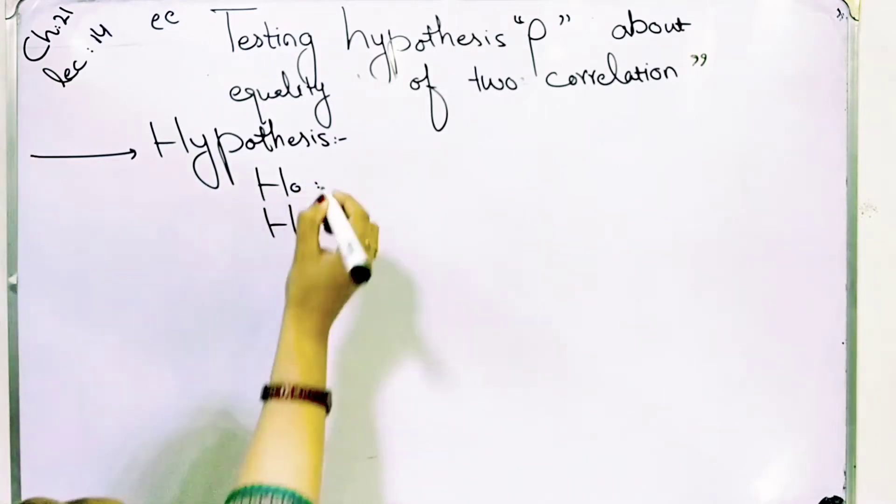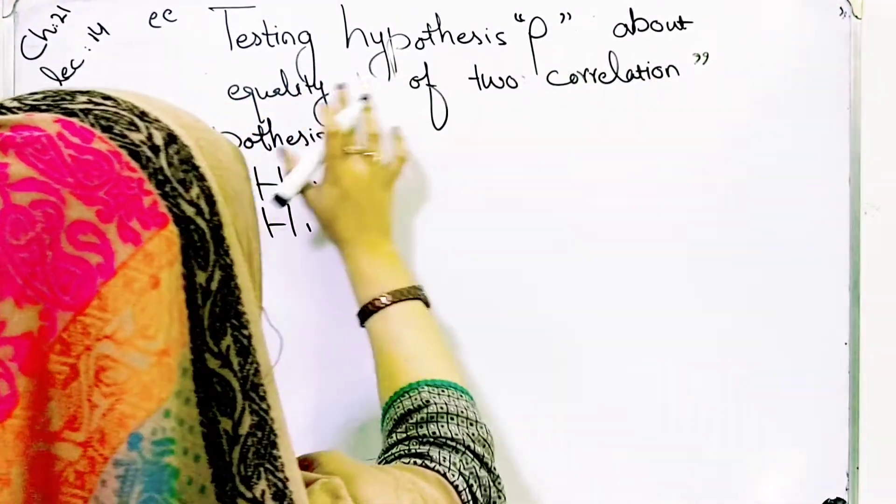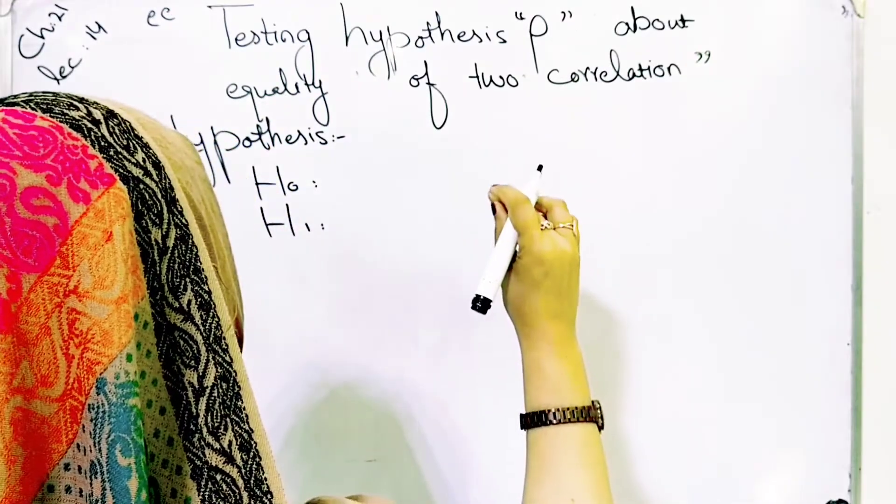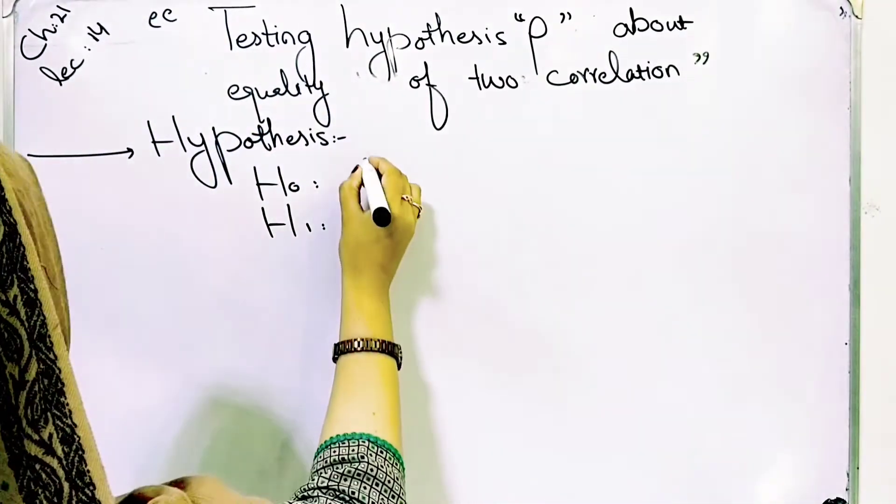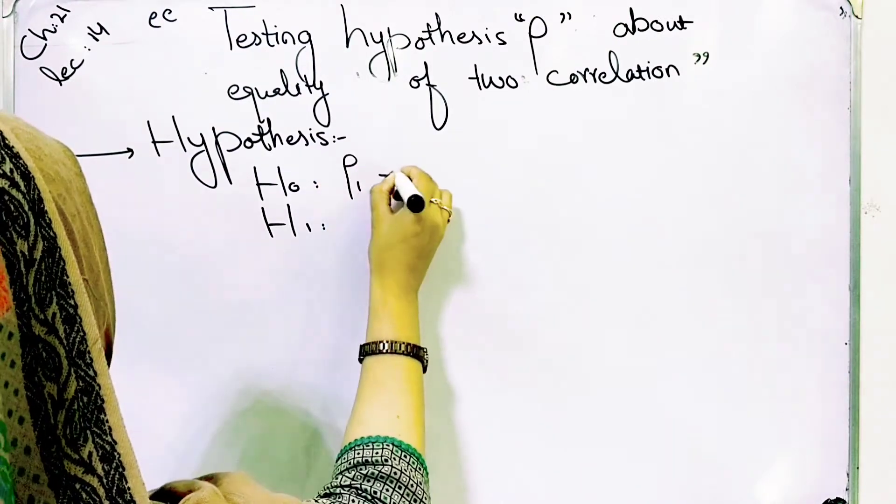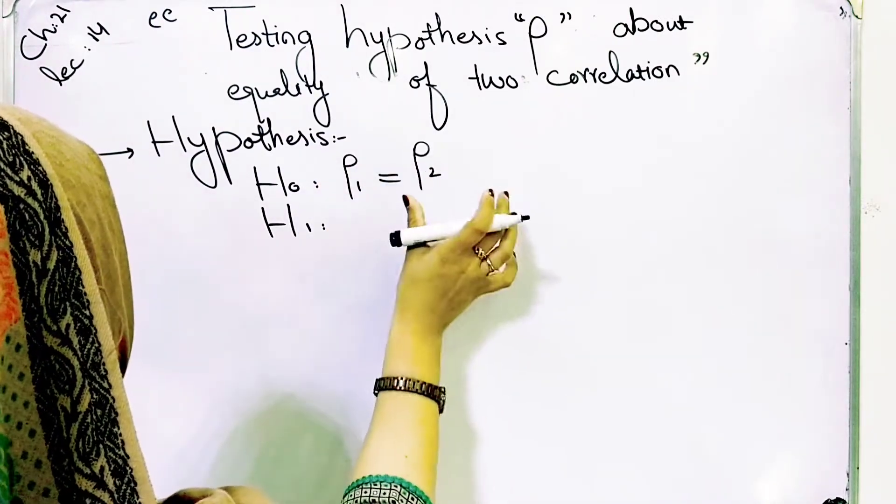We are talking about equality of two correlations. This means that rho 1 is equal to rho 2. Two correlations are equal.